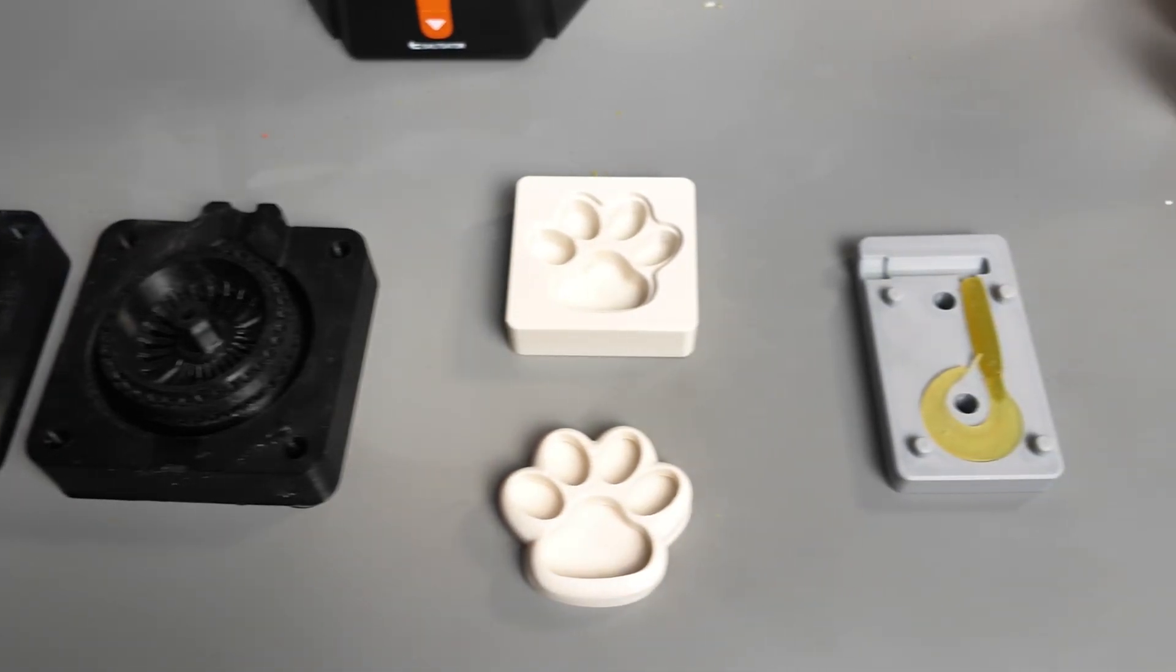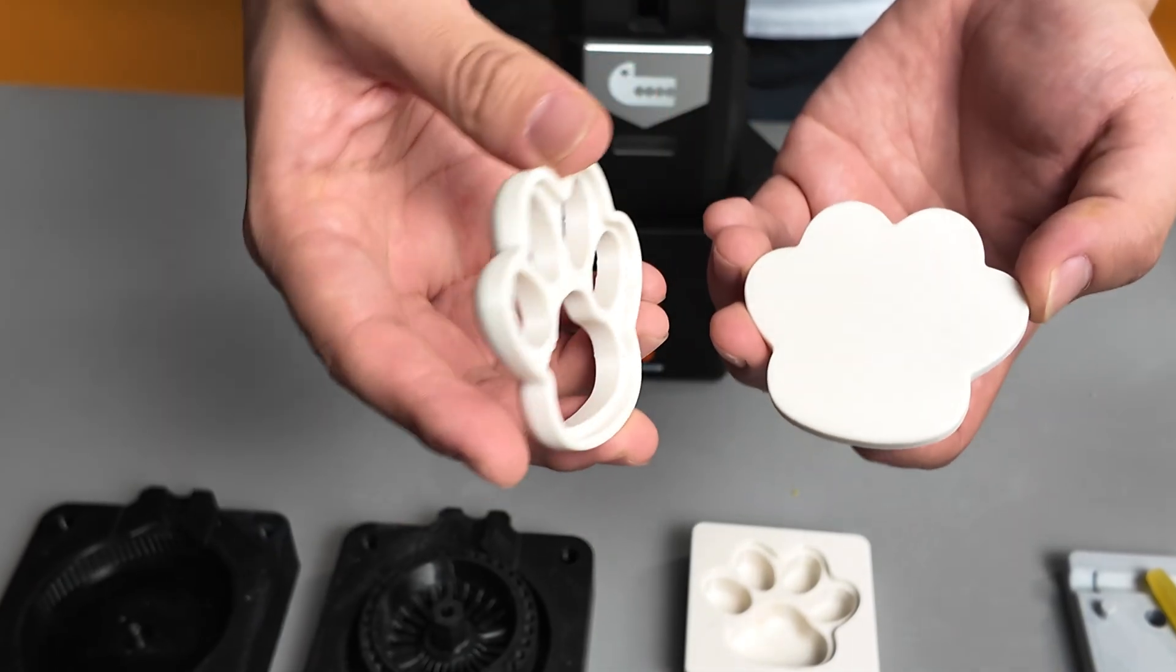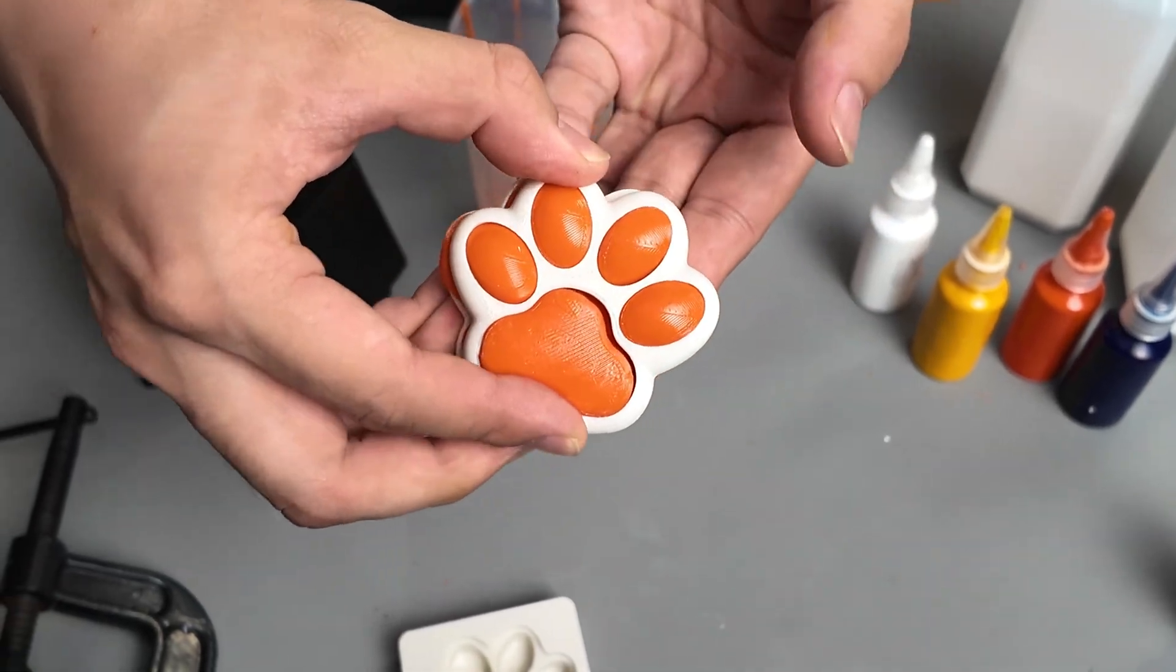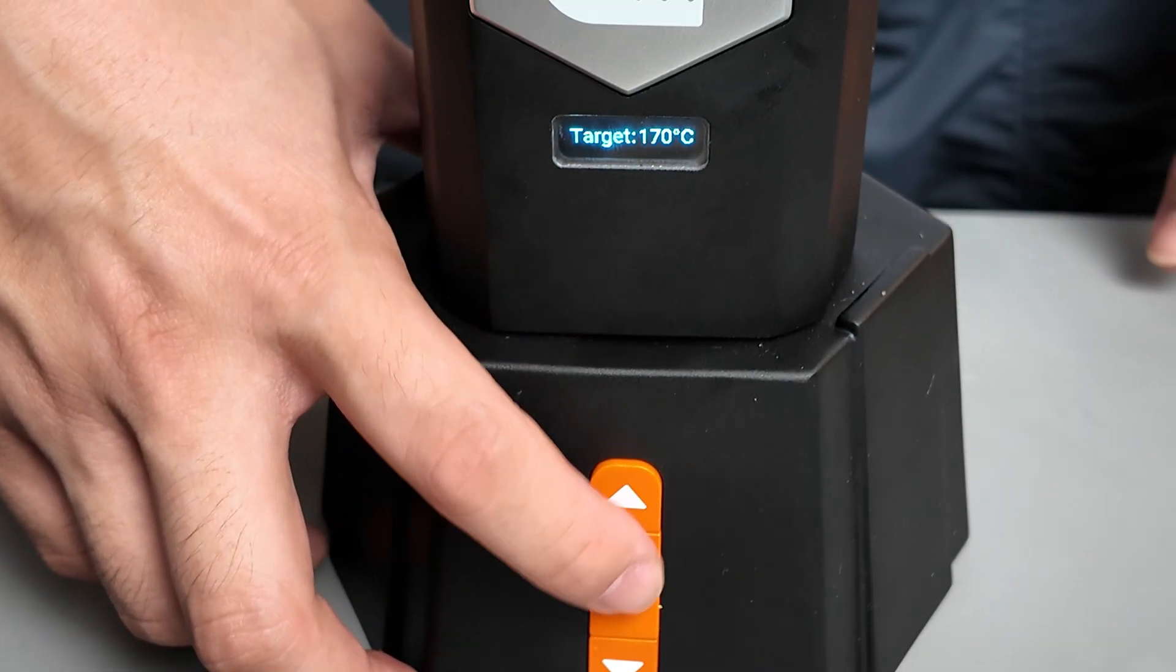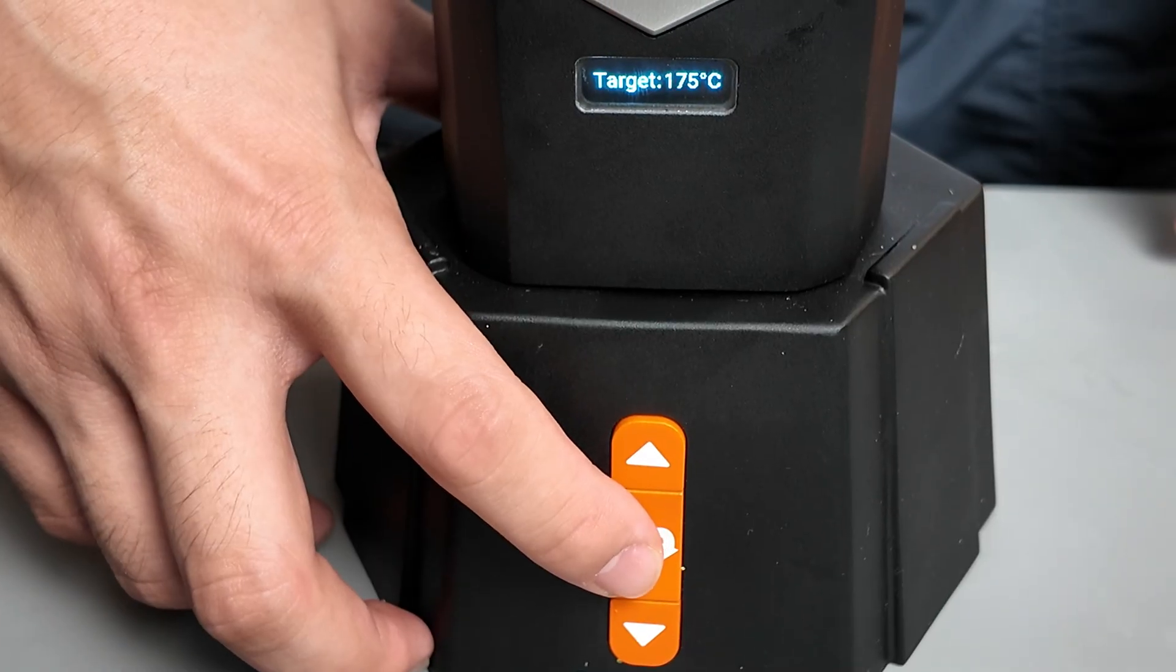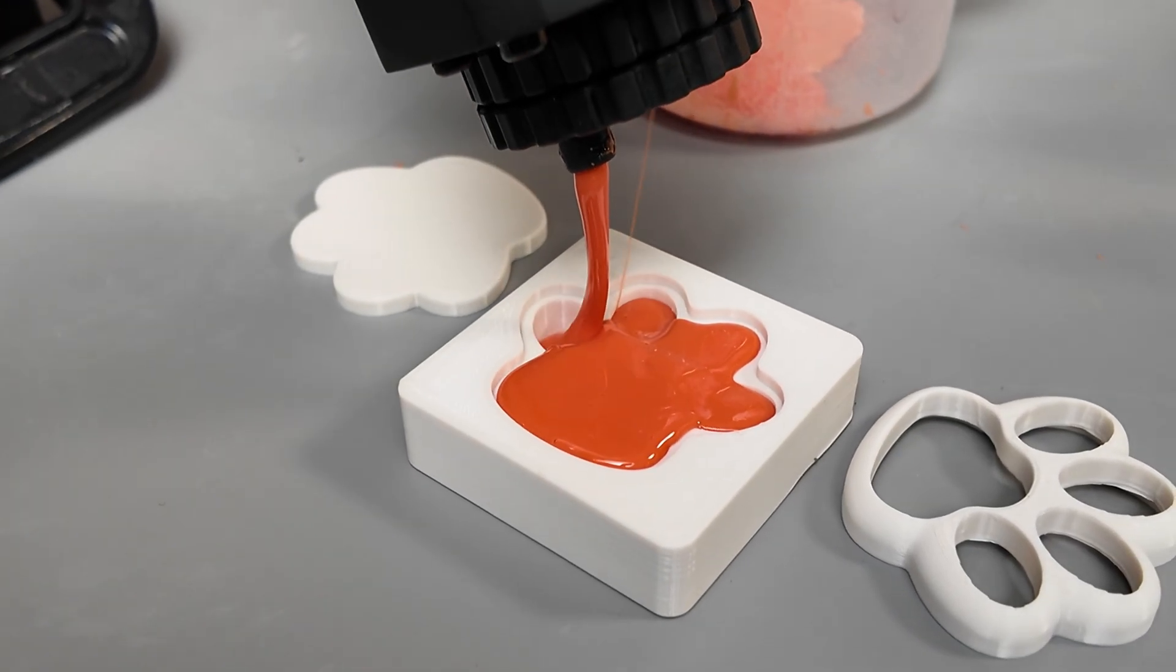For our first example, we'll make a cat paw figure with a hard 3D printed shell and soft, squishy pads inside. First, heat the soft gel raw material in Salt Gator, then inject it directly into the open paw mold.